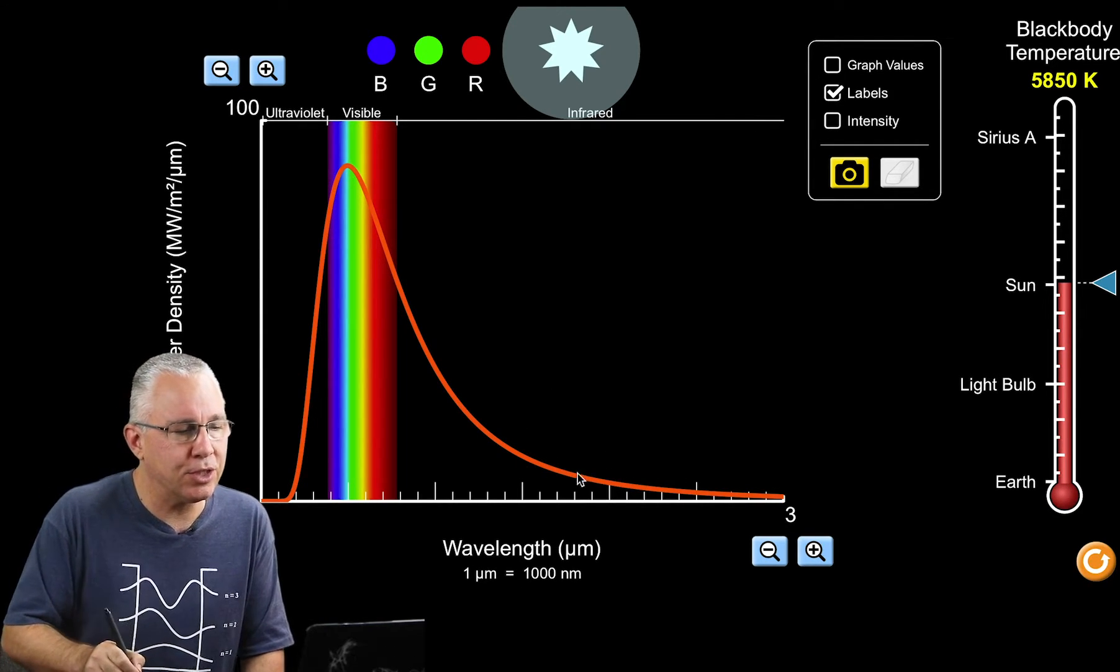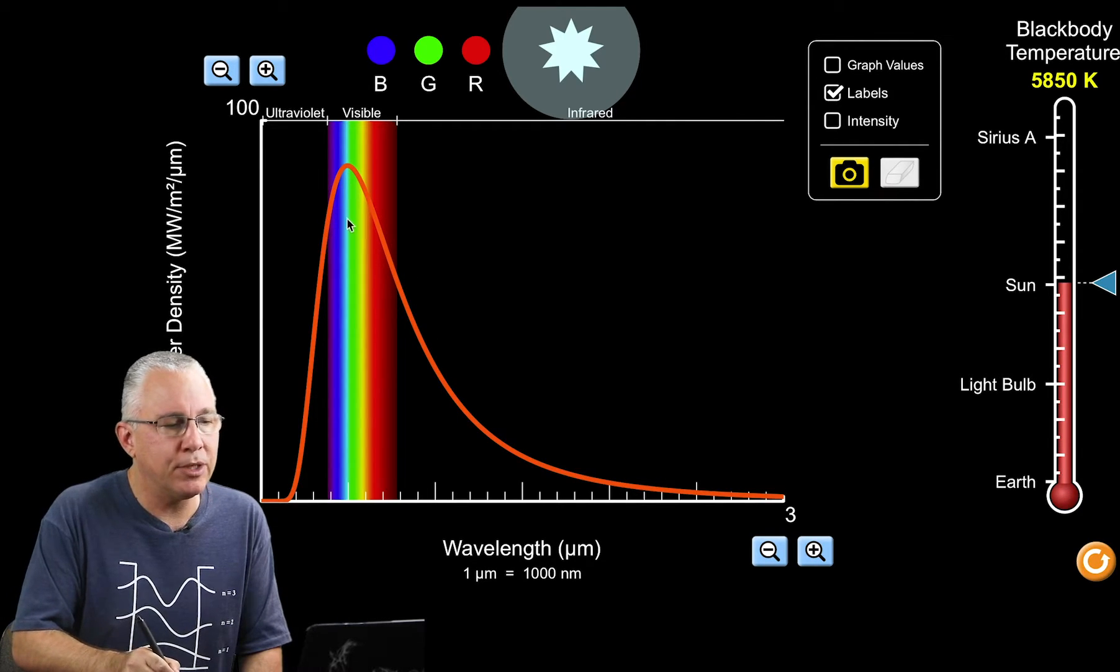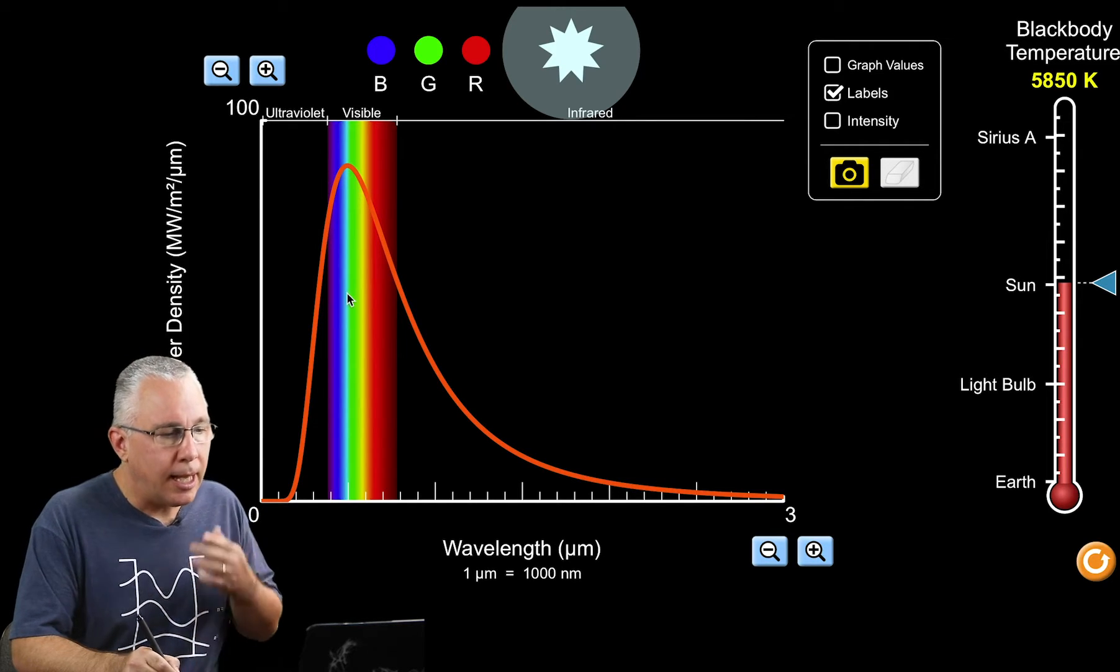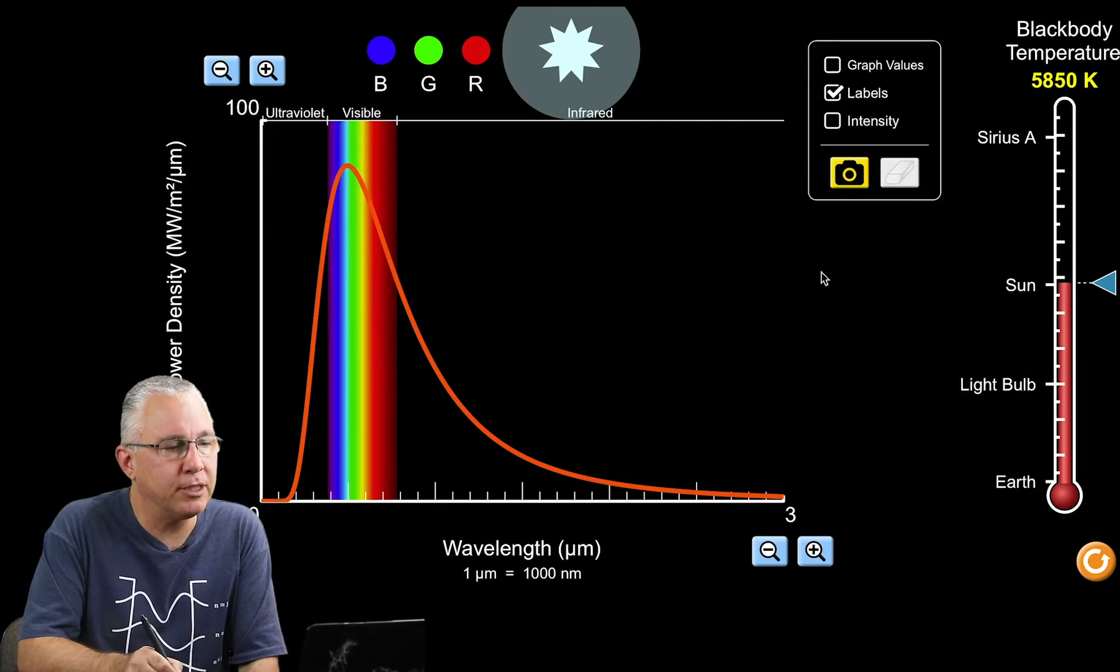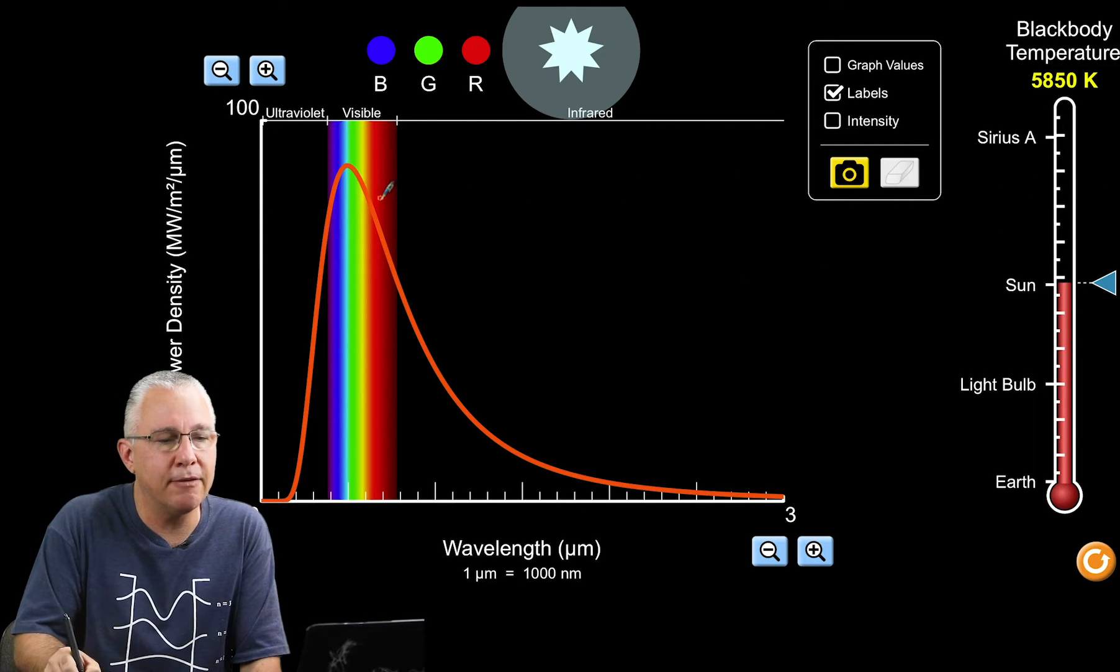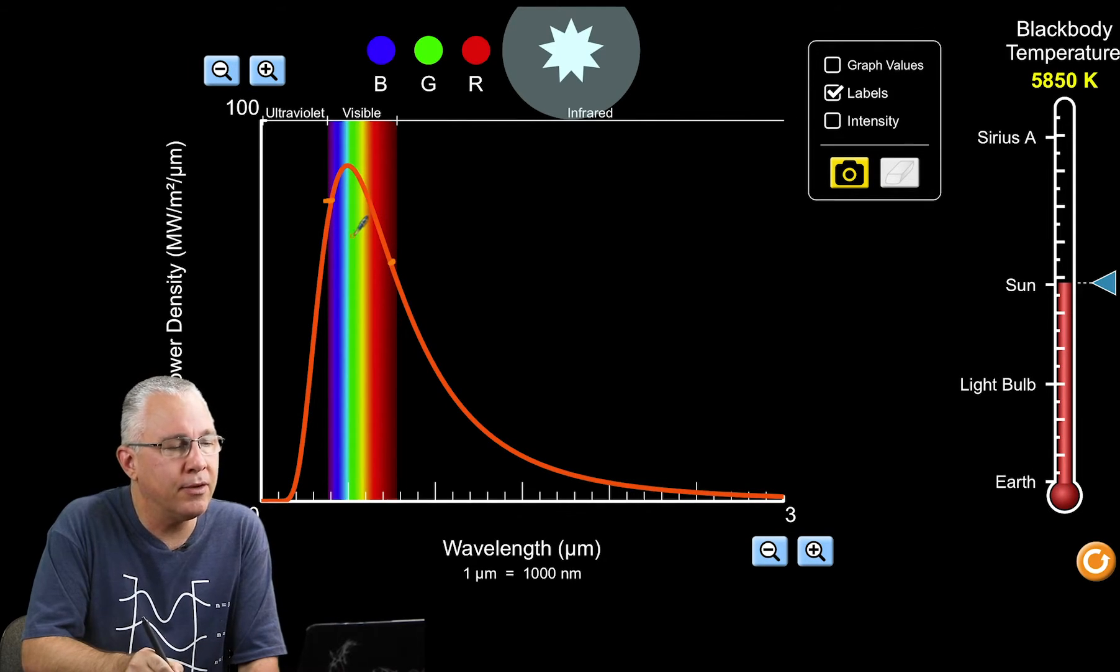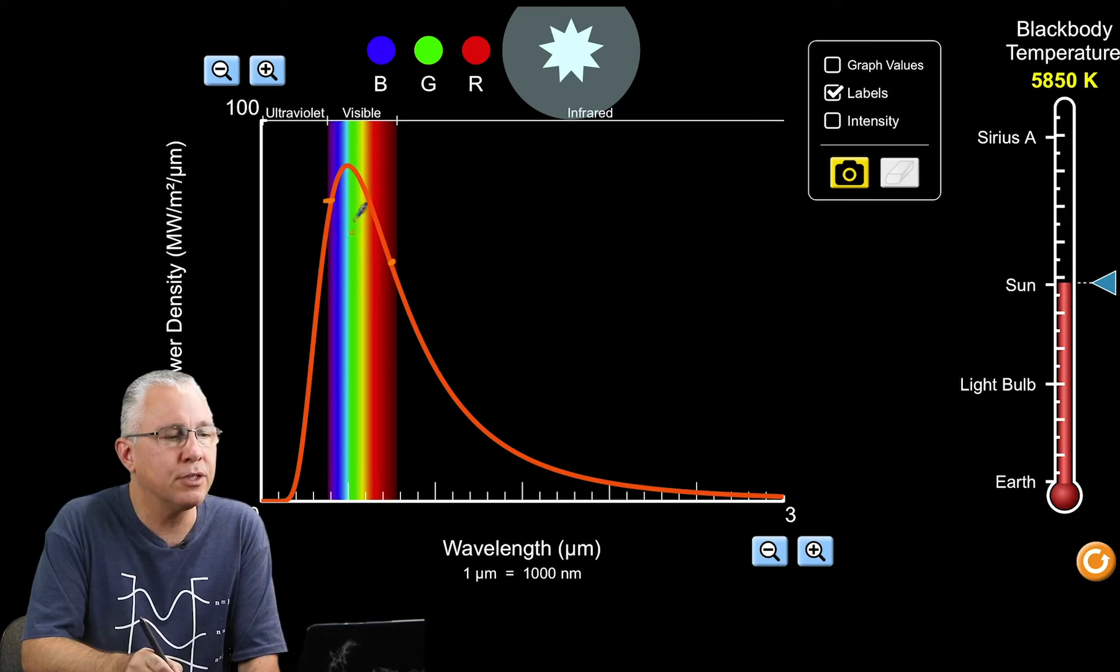Looking at our sun, we'll see we have a lot of infrared radiation but we certainly have a lot more radiation in the visible spectrum. In that visible spectrum, although we have differing amounts between ultraviolet and red, there's not a huge difference in the intensities of these wavelengths.